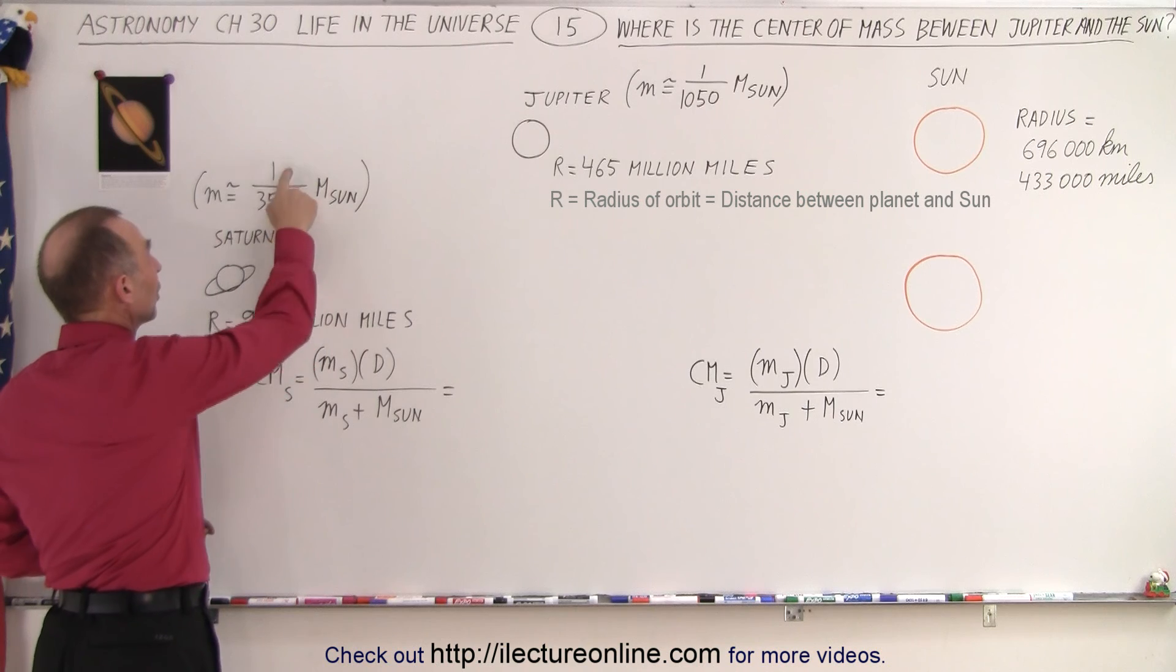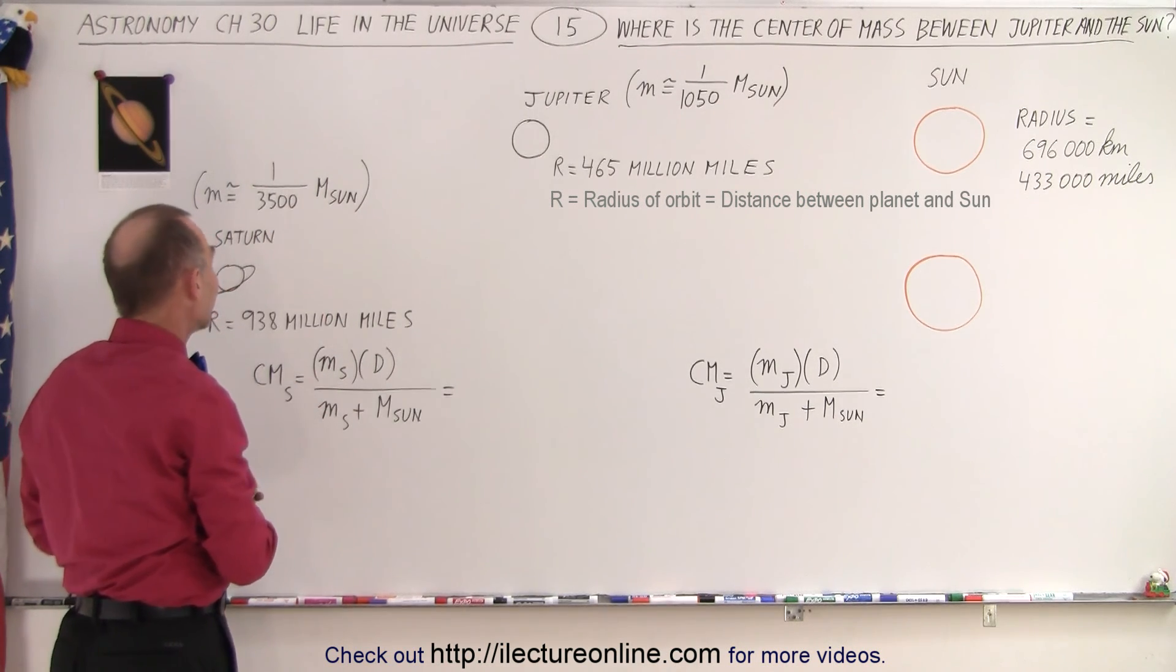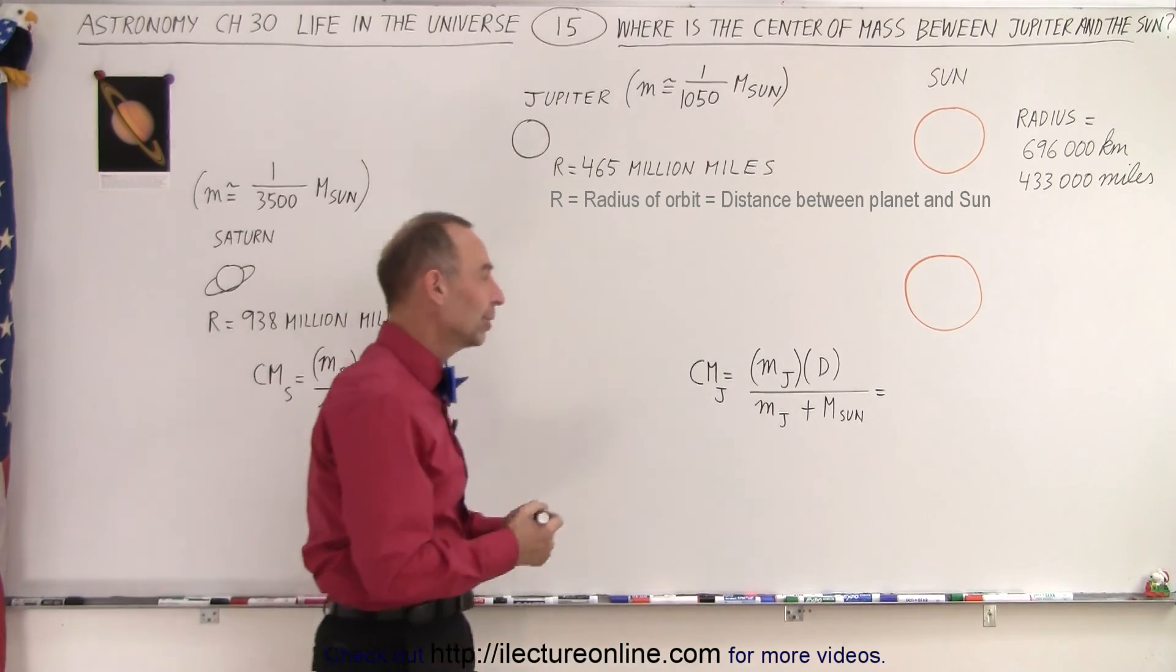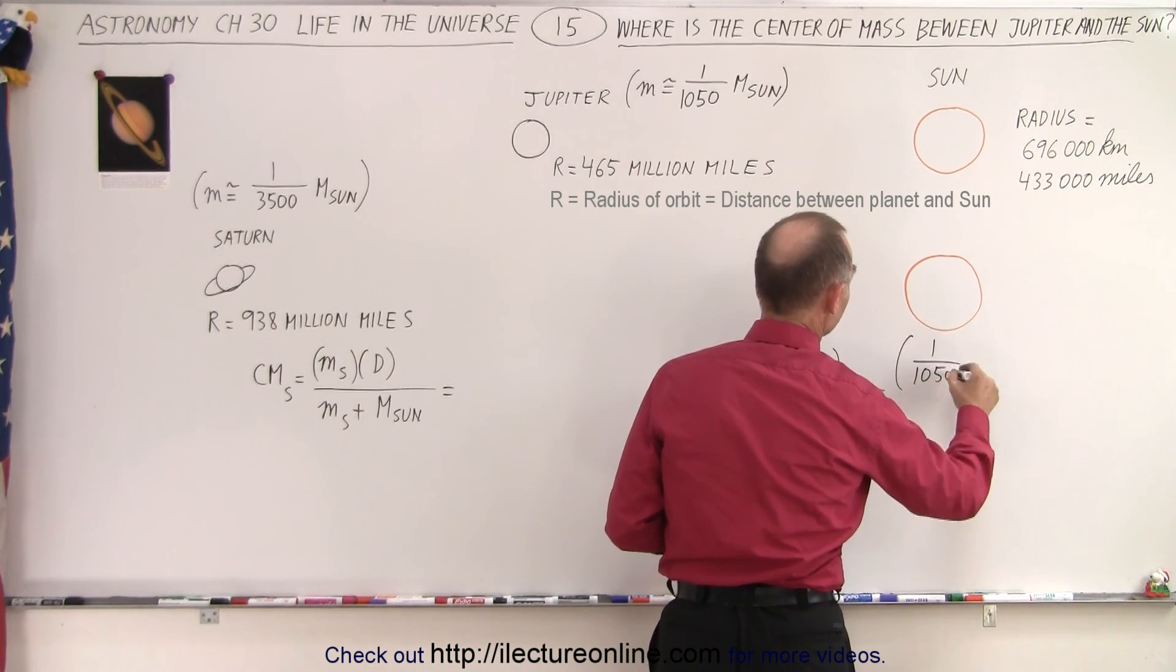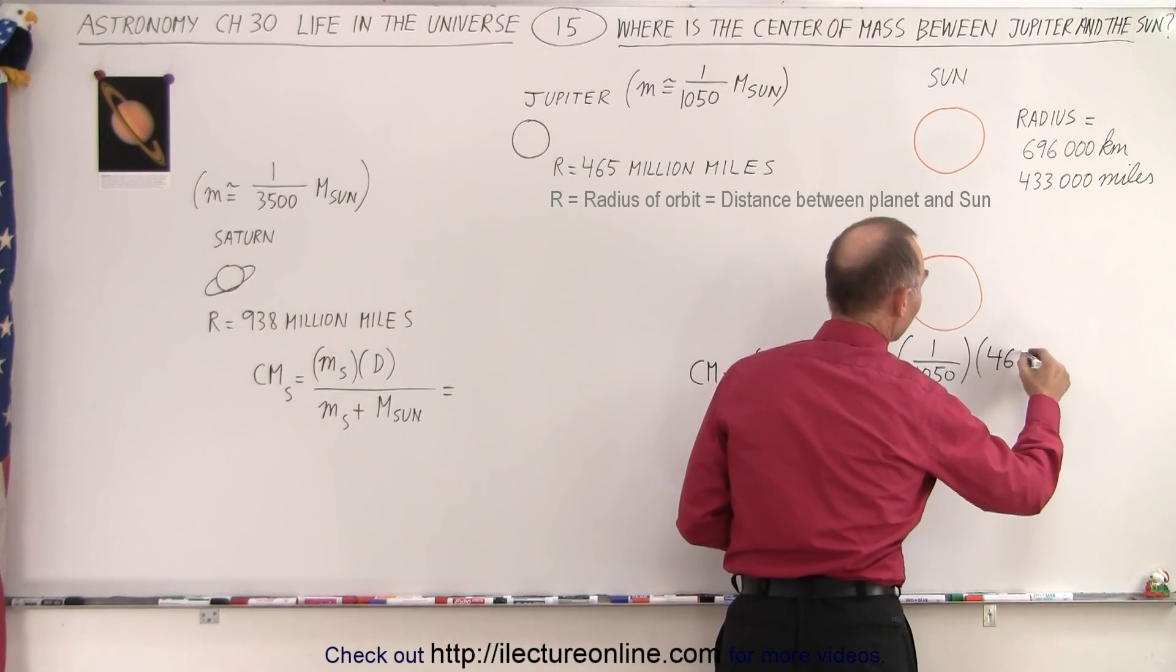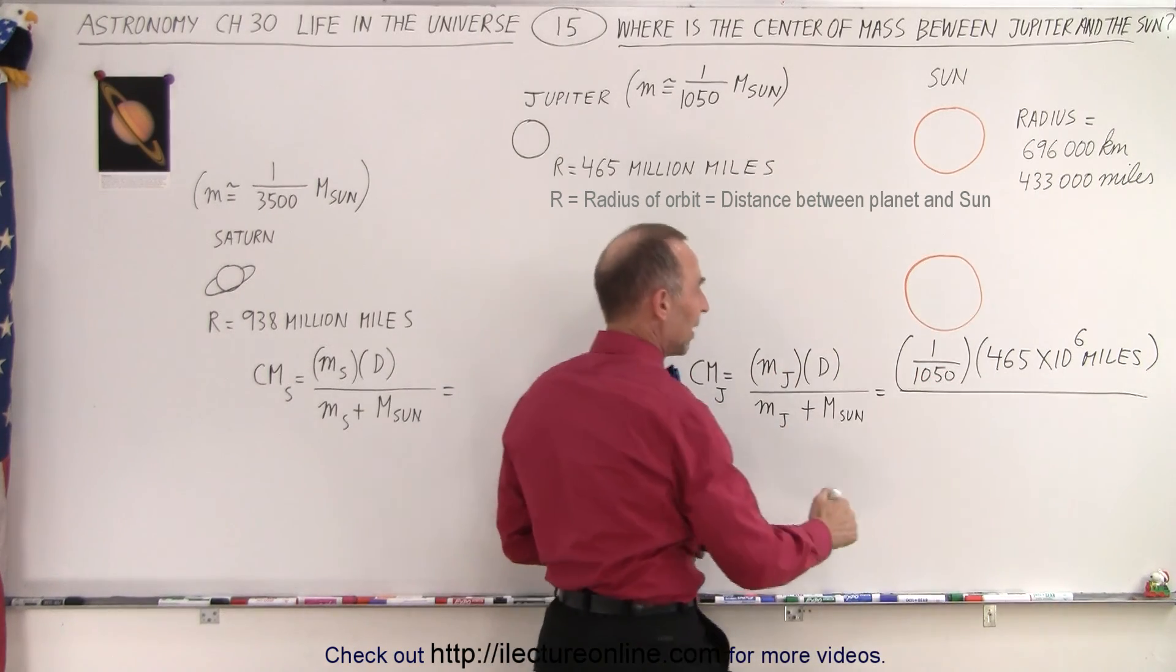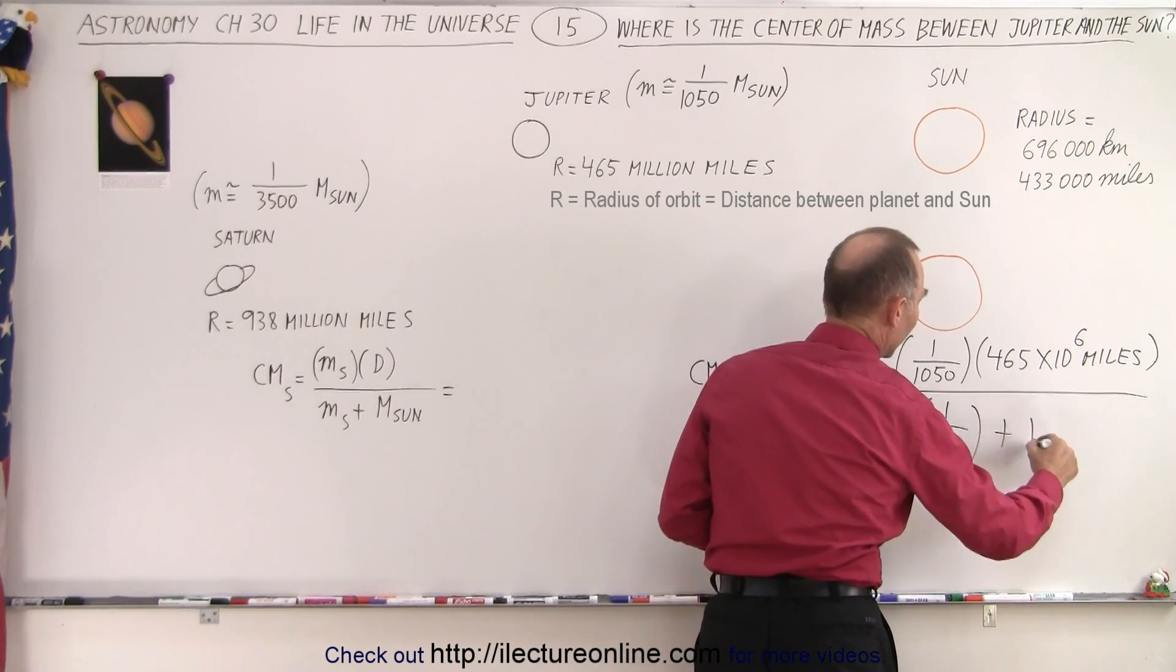And then Saturn has a mass which is 1/3500 times the mass of the Sun, so it's quite a bit less than the mass of Jupiter, but it's almost twice as far away at 938 million miles. And so from that we're going to calculate the center of mass. The way to do that is we take the mass of Jupiter, which is 1/1050, and we multiply that times the distance in miles, that would be 465×10^6 miles, and then we divide that by the sum of the mass of Jupiter and the sum of the mass of the Sun, so 1/1050 added to 1 times the mass of the Sun.